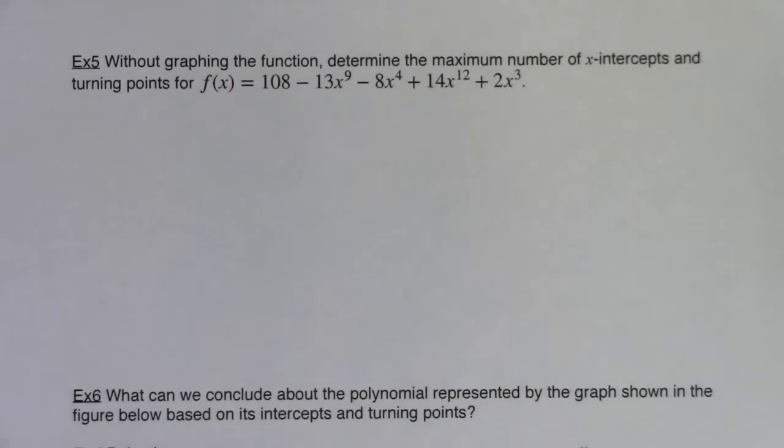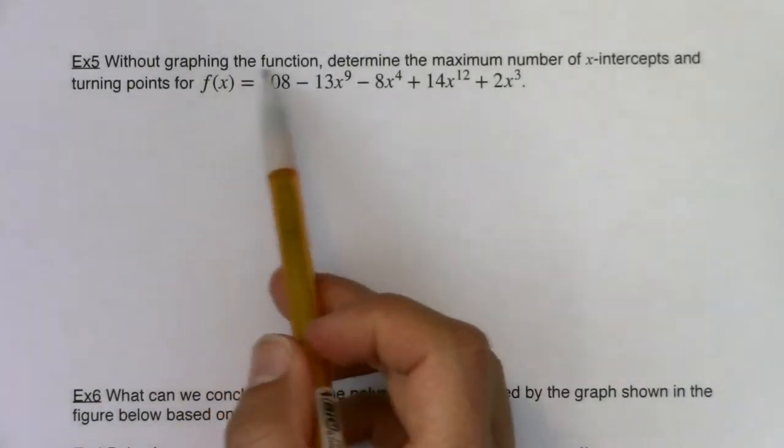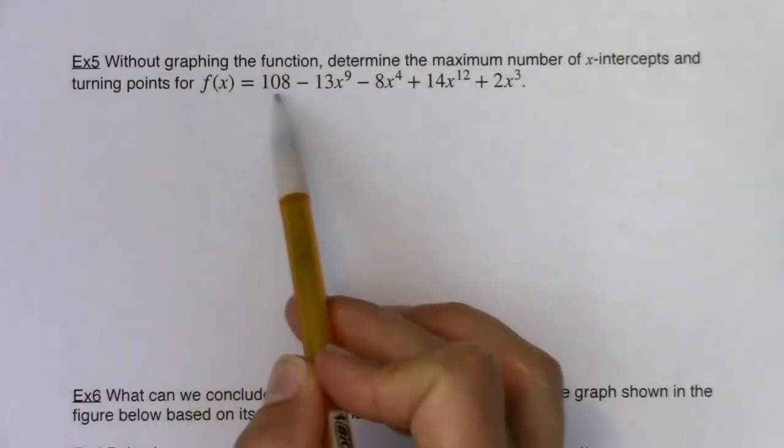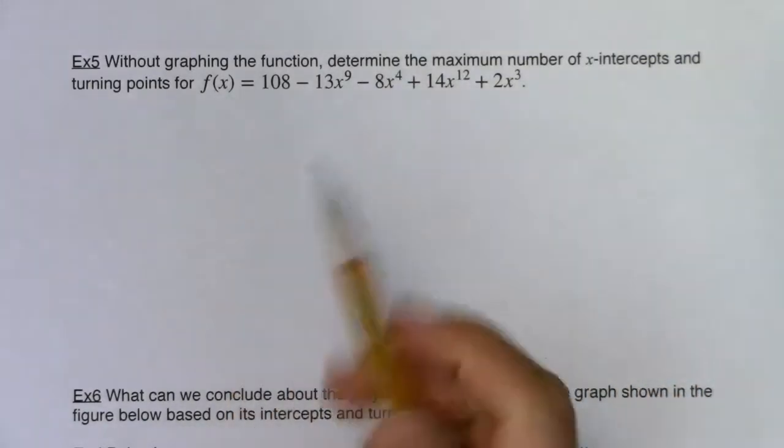Hey, Math 31, welcome to example five. So let's take a look at it. It says, without graphing the function, determine the maximum number of x-intercepts and turning points for this, oh, fun-looking beast.